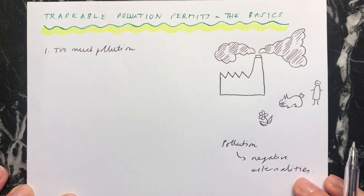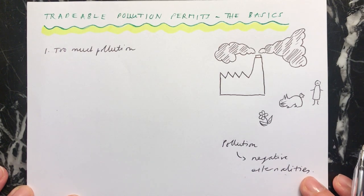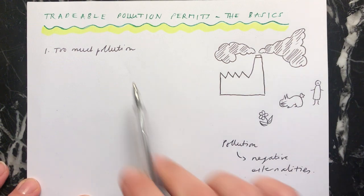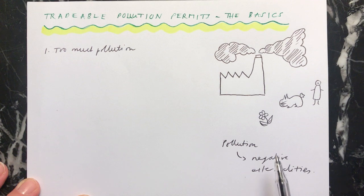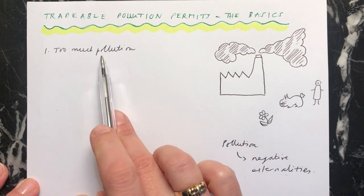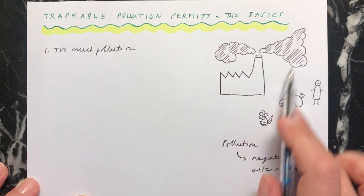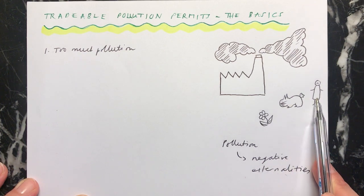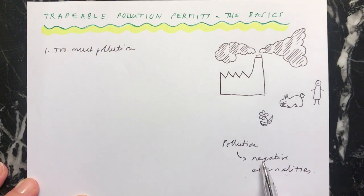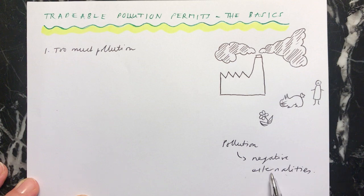Hi everybody. I'm now going to talk to you about another form of government intervention where there's market failure, and this is tradable pollution permits. This is where the government says that there's too much pollution — generally where there's pollution in industry and it's having a negative impact on third parties. So the pollution is leading to negative externalities, and the idea of tradable pollution permits is to try and reduce these negative externalities.